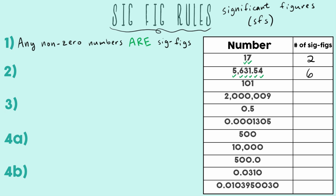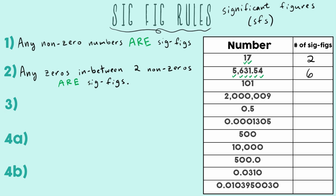Since we already took care of all the non-zero numbers with rule number one, rules 2, 3, 4A, and 4B are just talking about zeros. When we talk about SIGFIG rules, we're really talking about zeros — those are the hard ones. Rule two: any zeros in between two non-zeros are SIGFIGs. For example, 101 — both ones are SIGFIGs, and the zero in between them also counts, giving a total of three SIGFIGs.